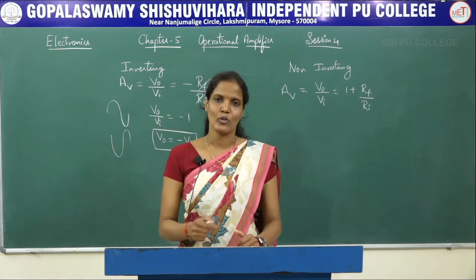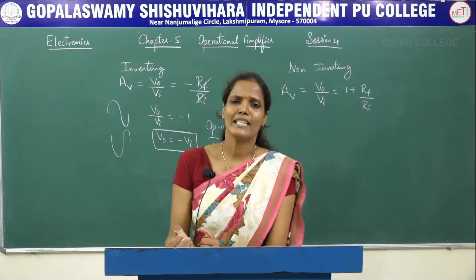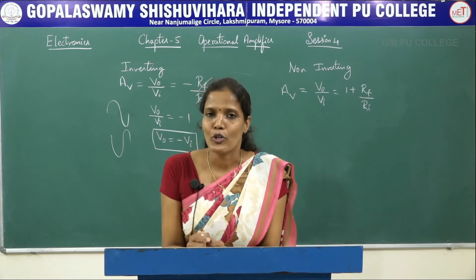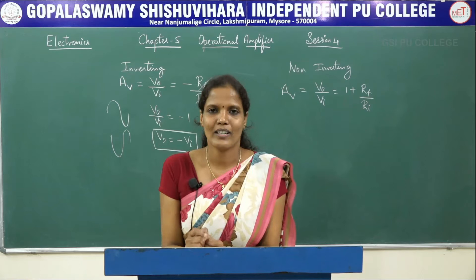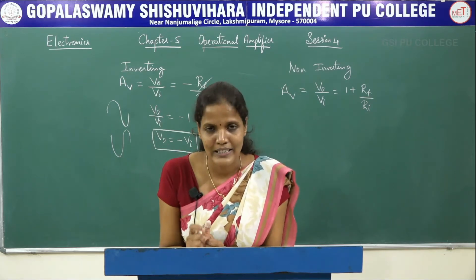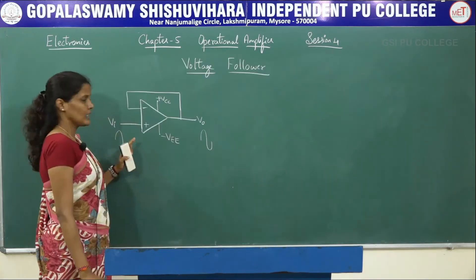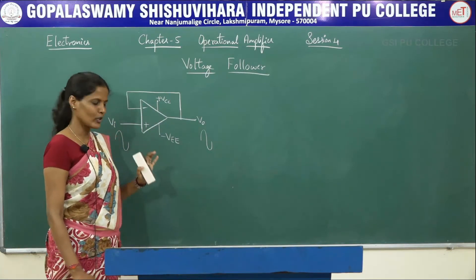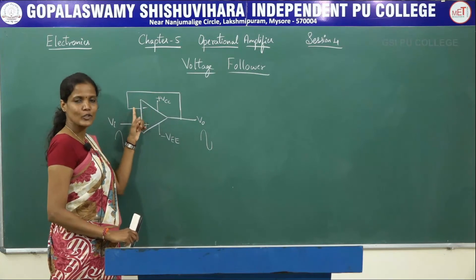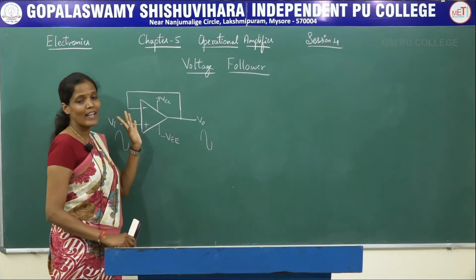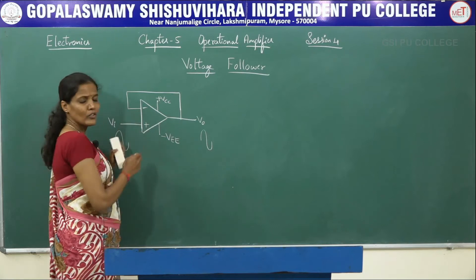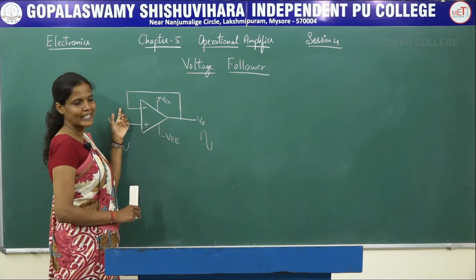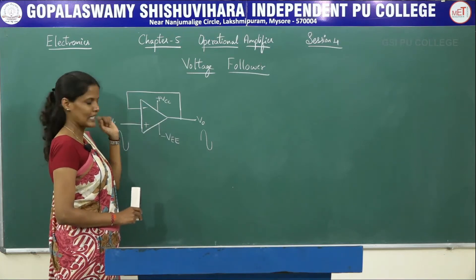Now let us try to understand what is voltage follower. The name itself is specifying — it follows the voltage. An amplifier whose output follows the input is called as the voltage follower. Let us understand this with the circuit. Here, the feedback is given to the inverting input terminal of the op-amp, but Rf value is equal to 0.